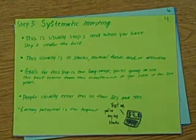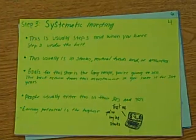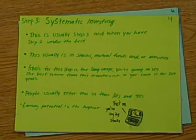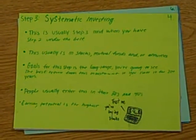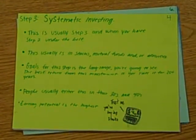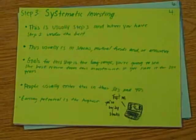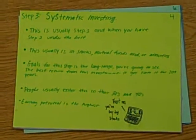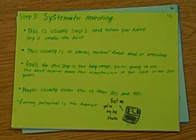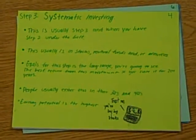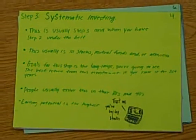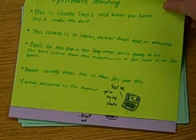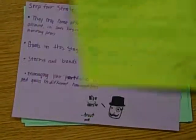Step 3: Systematic Investing. This is usually in stocks, mutual funds, annuities, things like that. The goal of this step is long range — you're going to see the best return after about 20 years. Earning potential is also higher here.